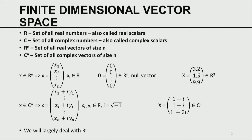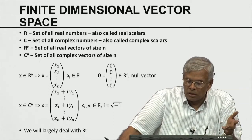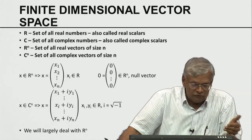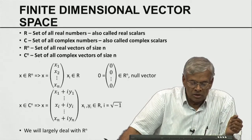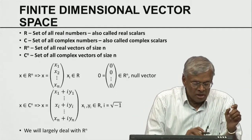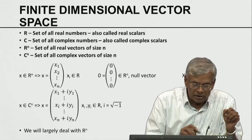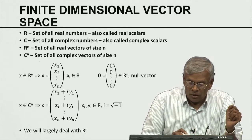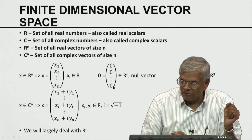I am also going to use this module to set up notation and basic concepts. R is the set of real numbers, also called real scalars. C is the set of complex numbers, called complex scalars. Rn, or R to the power n, refers to the set of all real vectors of size n. C of n is the set of all complex vectors of size n.